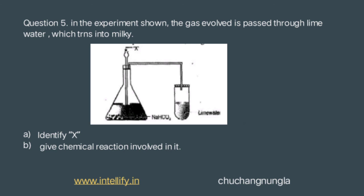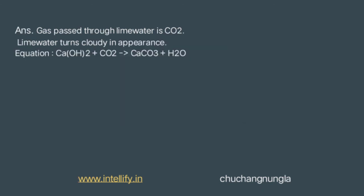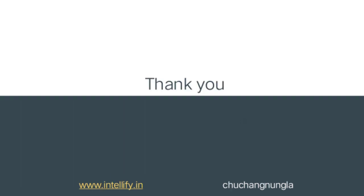Question 5: In the experiment shown, the gas involved is passed through lime water, which turns milky. Identify the gas and give the chemical reaction involved. Lime water is prepared by adding quicklime to water. When carbon dioxide is passed through lime water, white precipitates of calcium carbonate are formed, which makes the lime water cloudy in appearance.